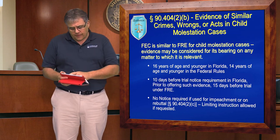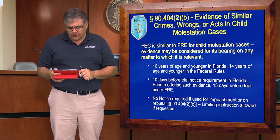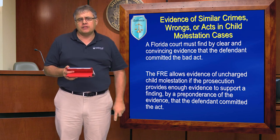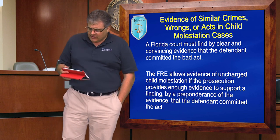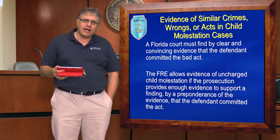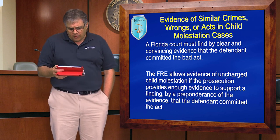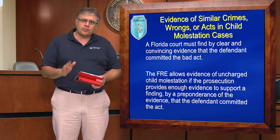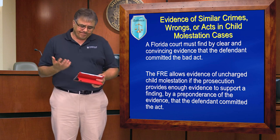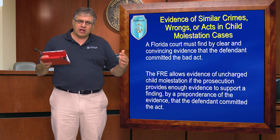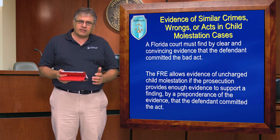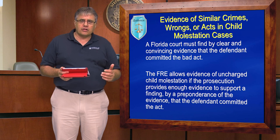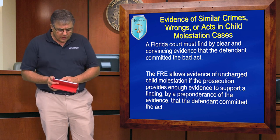Florida separates out abuse of children from abuse of adults sexually and the use of propensity evidence. With adults, consent could potentially be a factor. With a child, it's not an issue because a child cannot consent to sexual activity before reaching the age the law allows. Before this prior conduct can be admitted for propensity in Florida, the court must find by clear and convincing evidence that the defendant committed the prior bad act—not beyond a reasonable doubt, but much more than just a preponderance. In the federal system, you can get this type of character propensity evidence in with nothing more than preponderance of the evidence. This is yet another example of Florida more carefully protecting the rights of the individual and being concerned with the unfairly prejudicial nature of this type of evidence.